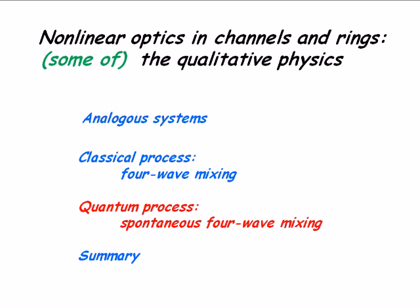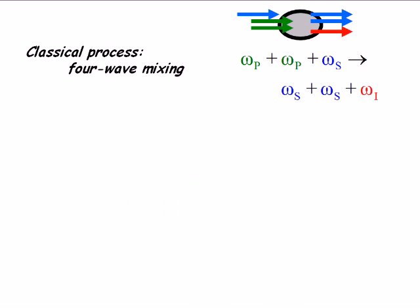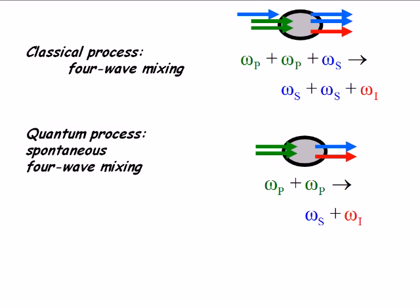Now let's look at quantum processes. What happens if we go into the quantum regime? Now we have something called spontaneous four-wave mixing. Remember, this was the classical process. The quantum process looks sort of the same, but you don't put that signal beam in to seed the process.